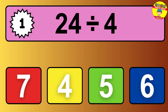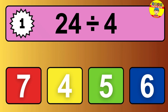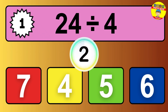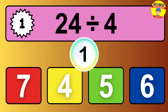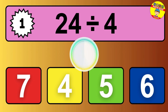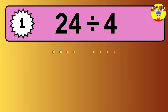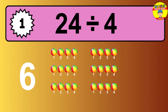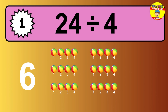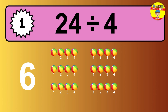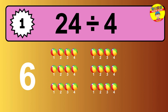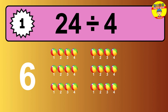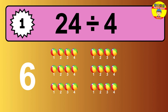24 divided by 4 — time to think. Let's go to the solution. Divide the number 24 by 4. Each group contains 4 units, so dividing 24 by 4 results in 6 equal groups. Thus, the result is 24 divided by 4 equals 6.